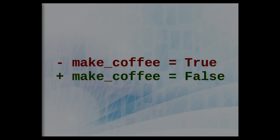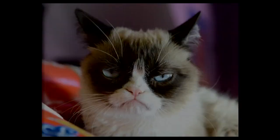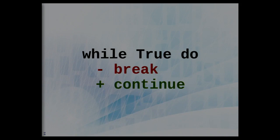Another possible source of mutations is constant values — you can replace these values with something else. In this example, we replace true with false. Another possible source of mutations is loops. We may, for example, modify the loop condition, or in this example, change break to continue, resulting in an endless loop. And when you have an endless loop, this is what happens.